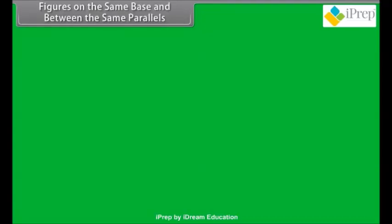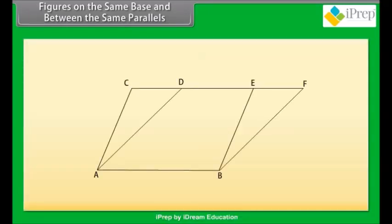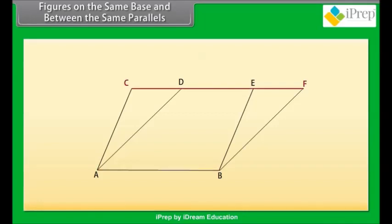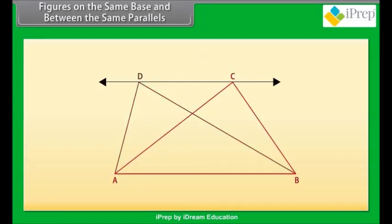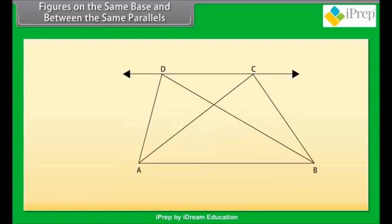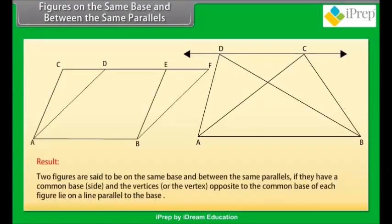Figures on the same base and between the same parallels. Now look at this figure. Parallelogram ABEC and parallelogram ABFD are on the same base AB. The vertices C and E of parallelogram ABEC opposite to AB, and vertices D and F of parallelogram ABFD opposite to AB, lie on the same line CF which is parallel to AB. So, both parallelograms lie on the same base AB and between the same parallels AB and CF. Similarly, triangles ADB and ACB both lie on the same base AB and between the same parallels AB and DC. Two figures are said to be on the same base and between the same parallels if they have a common base side and the vertices opposite to the common base lie on a line parallel to the base.